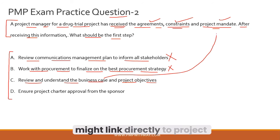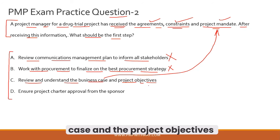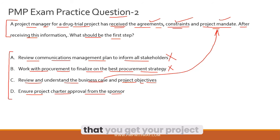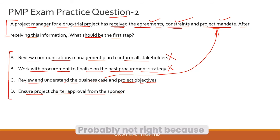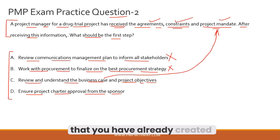Option C — review and understand the business case and project objectives — is a good option. The business case links directly to the project mandate, and as project manager still in initiation, it is sensible to review and understand the business case and project objectives before proceeding. Let's hold this and evaluate option D: ensuring project charter approval from the sponsor. This could be an option, but ask yourself — has the project charter already been created?